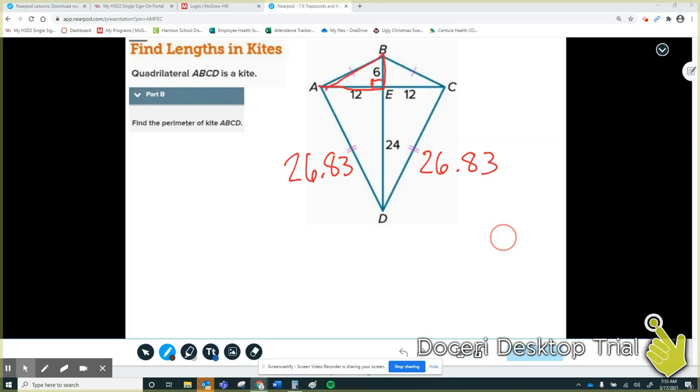So once again, I know that this top angle is a right angle, so I've got myself another right triangle so I can use Pythagorean theorem a second time. The bottom will be 12, the vertical piece will be 6, and my diagonal piece will once again be X.